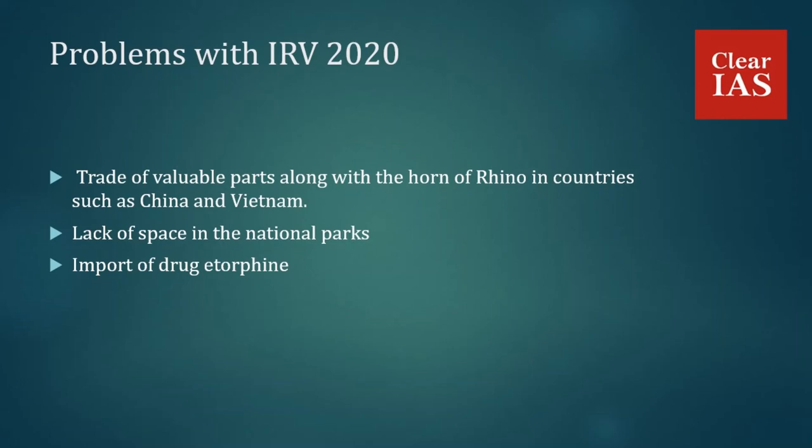There is also a drug called etorphine — a tranquilizing drug of choice — which has to be imported and is essential for the translocation of rhinos. This import is a big challenge. However, zoos from Australia and other countries have donated around half a million dollars for the conservation of Indian rhino species under IRV 2020.